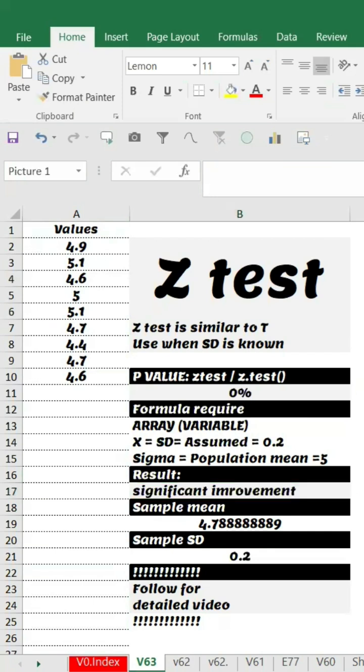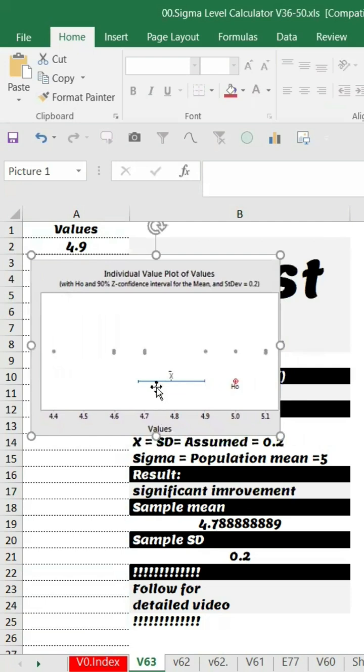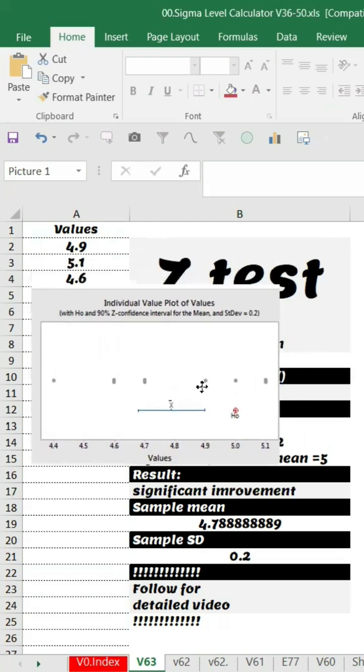If you look at the graph like this, this is the mean value and this is the null hypothesis. That means we have to reject the null hypothesis.